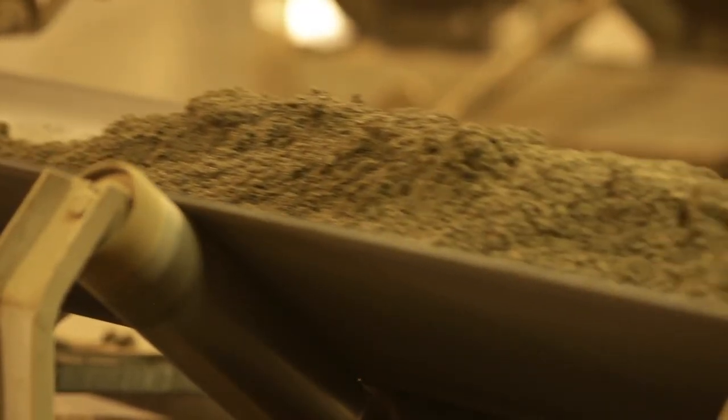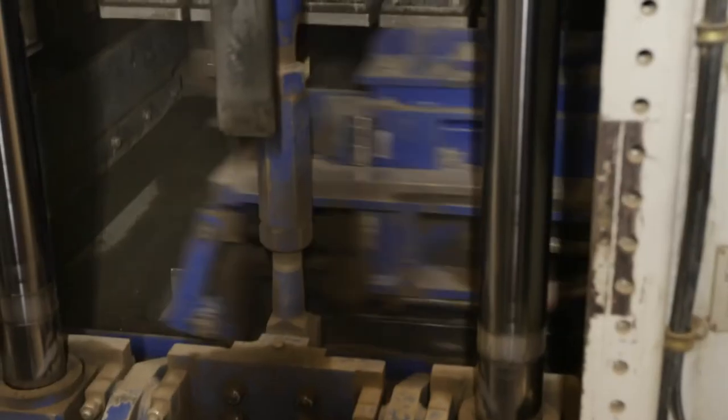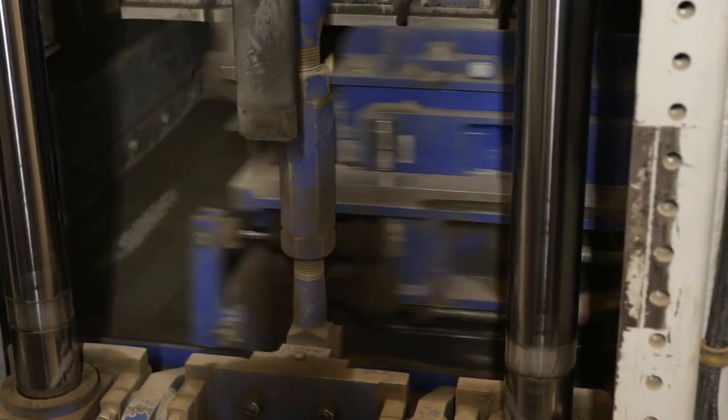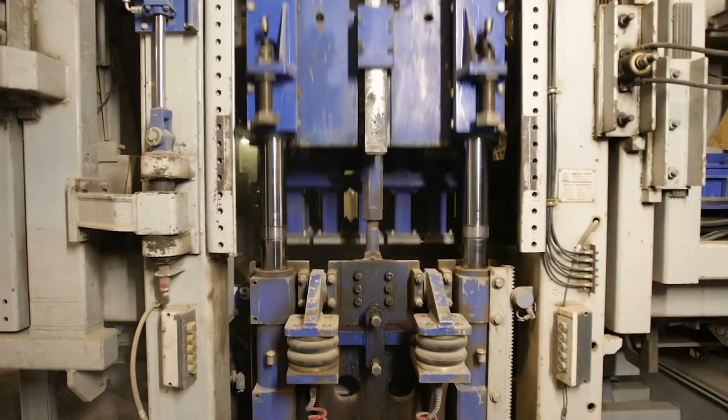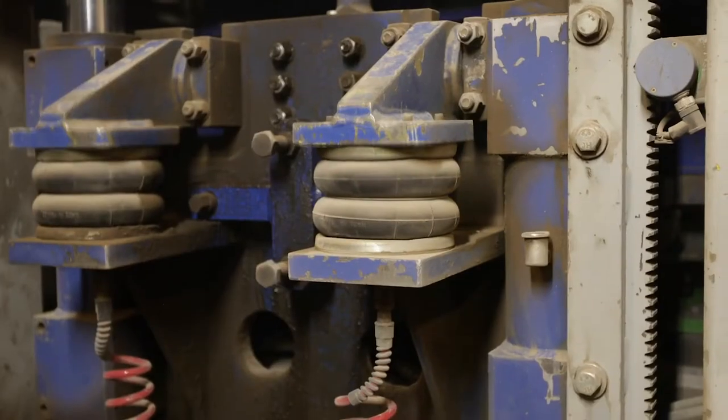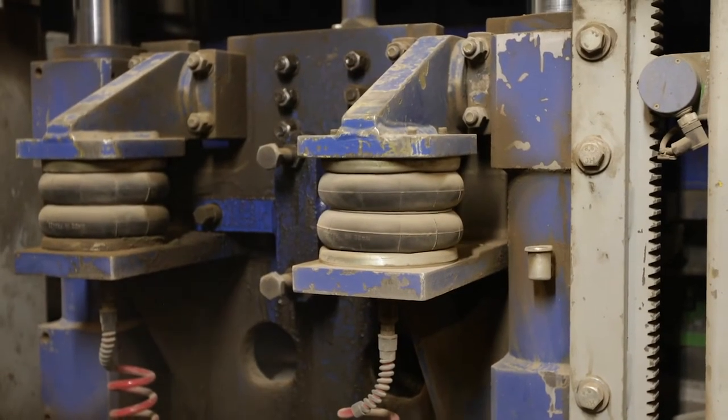This mixture, which is now called zero slump concrete, is conveyed into a machine which then dispenses a portion of the mix through a feed drawer into the mold. The feed drawer retracts out of the way and a tamper head drops down applying thousands of pounds of compression.